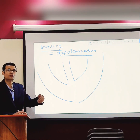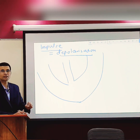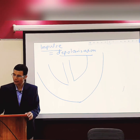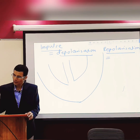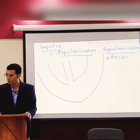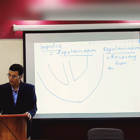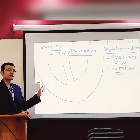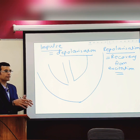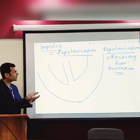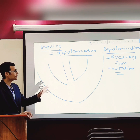It is the depolarization which travels. So impulse traveling means depolarization traveling. Then what is repolarization? Repolarization means recovery from excitation — recovery from membrane excitation — so that the membrane can excite again. That is how we should look at depolarization and repolarization. Let us not look at them as two parts of an action potential; let us look at them separately, only then will we be able to understand what happens in the heart.